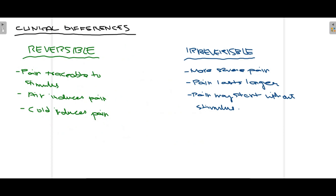There are certain clinical differences between reversible pulpitis, where the pulp can be saved, and irreversible pulpitis, where the pulp must be removed. In reversible pulpitis, pain is mostly traceable to a stimulus, but in irreversible pulpitis the patient cannot trace where the pain is starting from, and the pain is more severe. In reversible pulpitis, air and cold induce and worsen pain, and pain duration is shorter. In irreversible pulpitis, pain lasts longer and may start with or without a stimulus — it just starts suddenly.